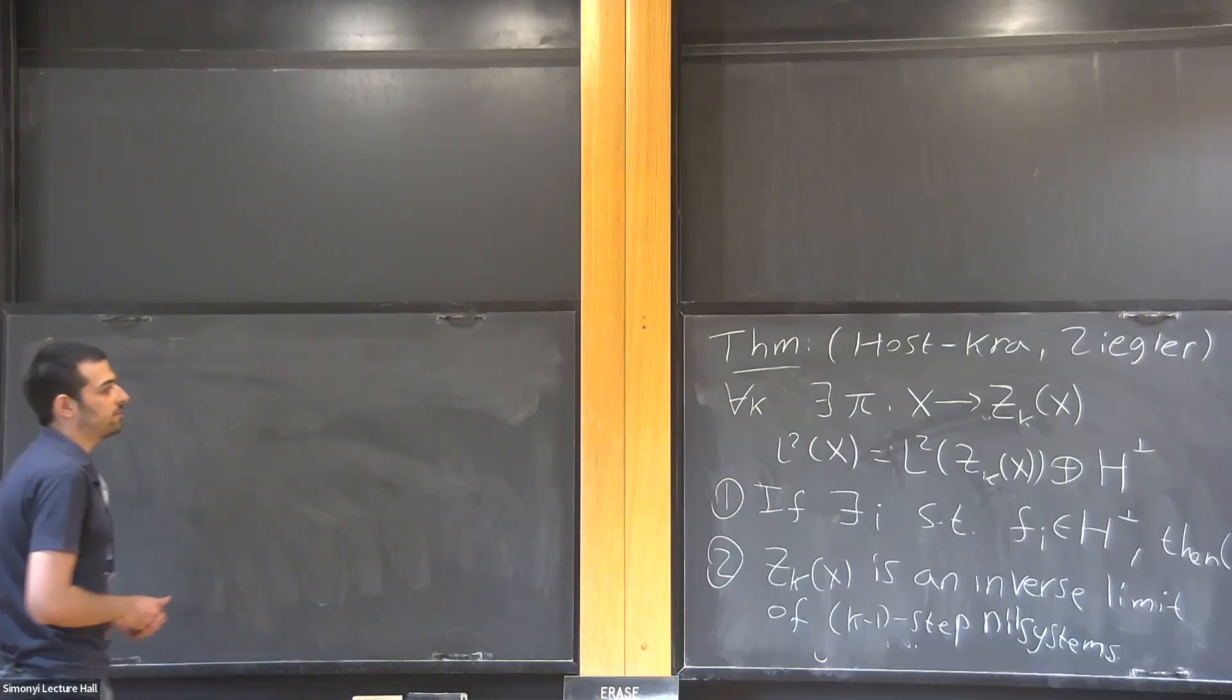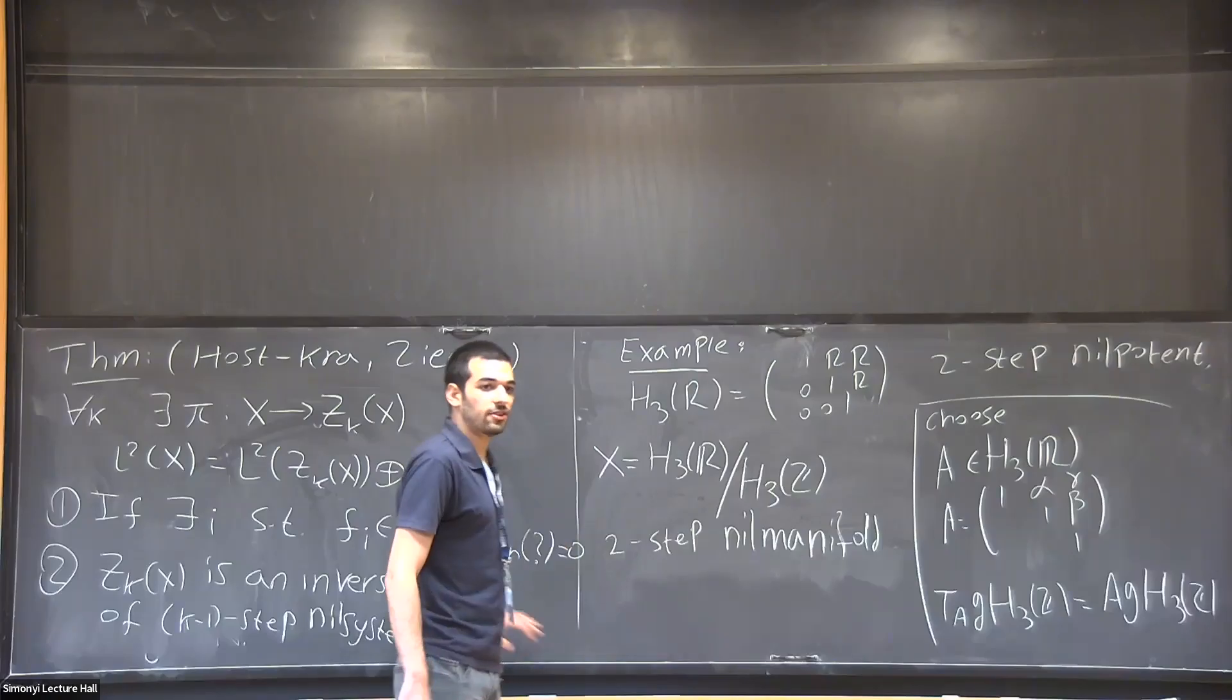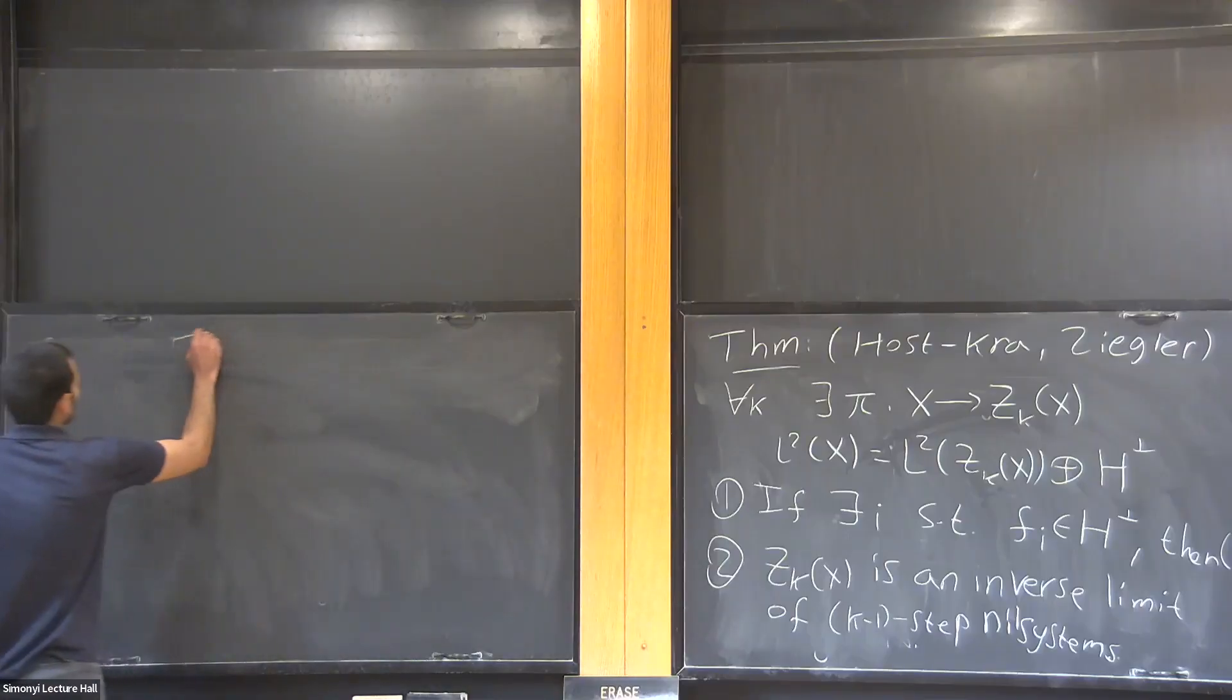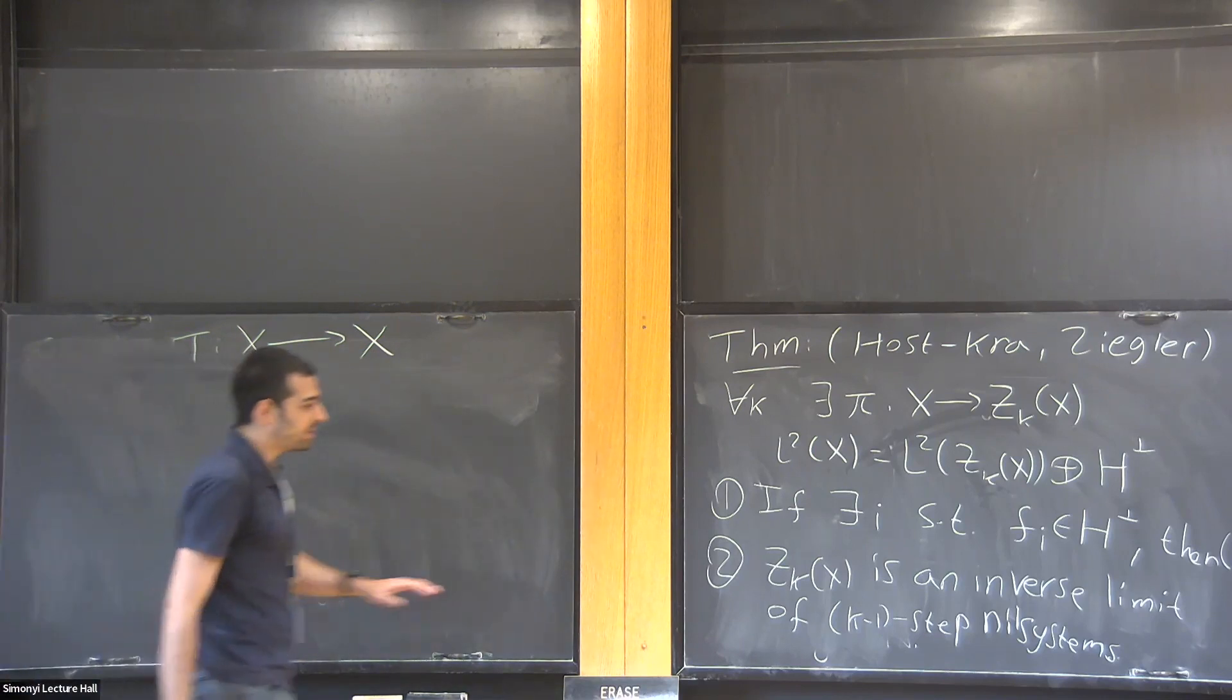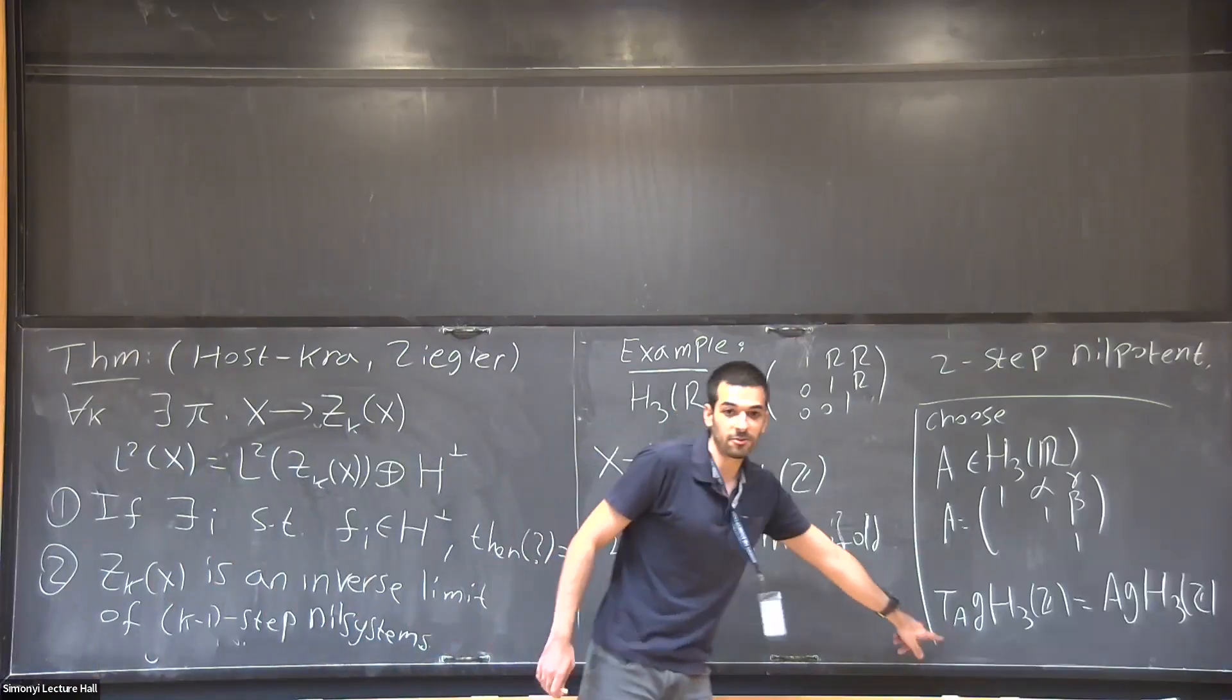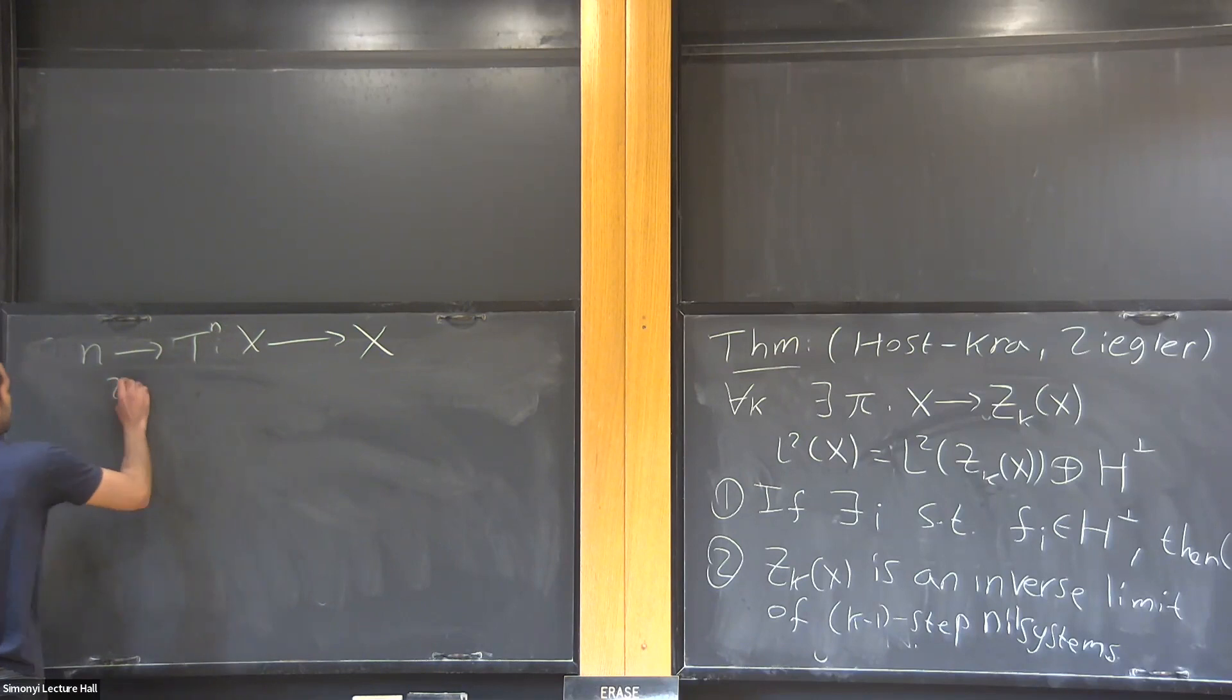So now what I was interested in doing is trying to see if I can generalize these results to settings where we have actions of other groups. So usually, we say that we have a measure-preserving transformation T from X to X. And actually, to really prove this theorem, one has to assume that T is invertible, right? Because the action here must be invertible, we have groups. And therefore, we can see this transformation as a Z-action. But in general, we can study arbitrary G-actions on arbitrary probability spaces by measure-preserving transformations. Specifically, I was interested in countable amenable groups.